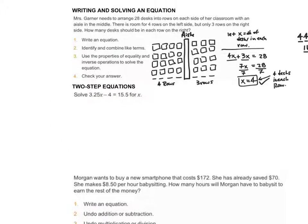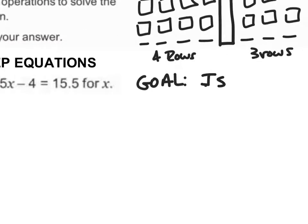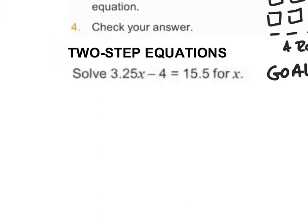Let's go ahead and talk about two-step equations. On a two-step equation, our goal is to isolate our x value — isolate your variable. The interesting thing when you solve equations is that when you're doing your inverse operations, you kind of want to work backwards from your order of operations — PEMDAS — where you do all those things in an order. When solving equations, you work in the opposite order.